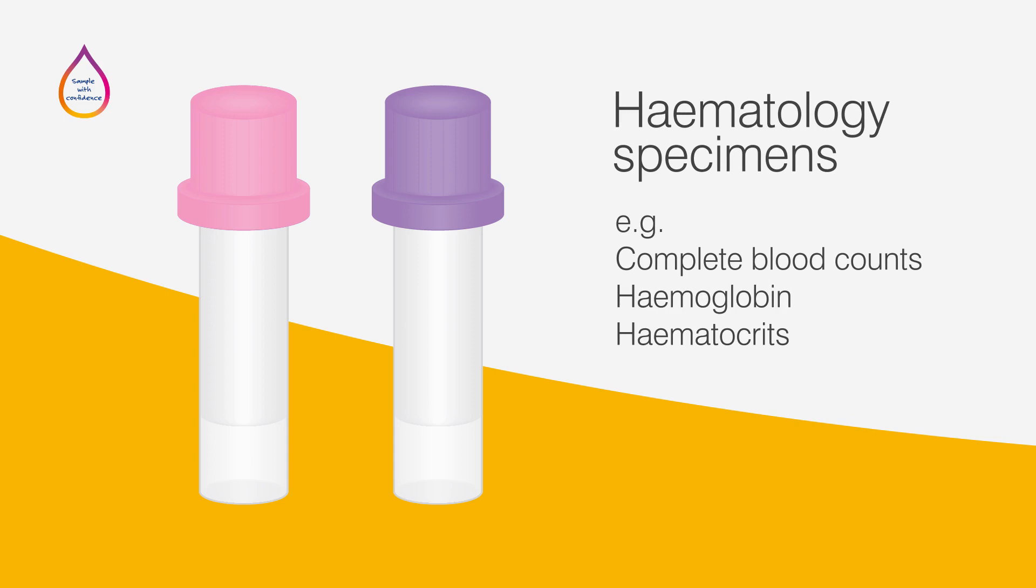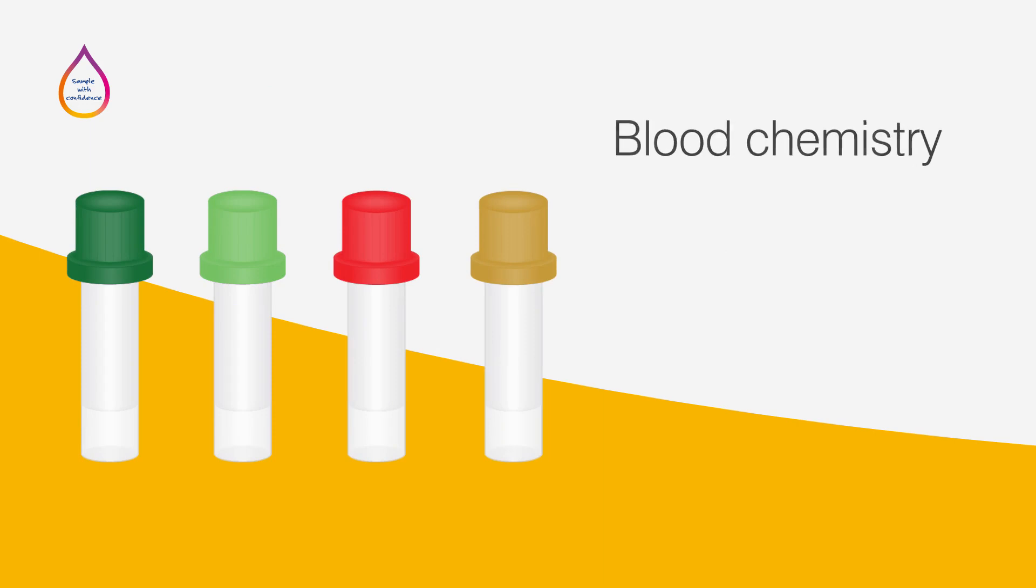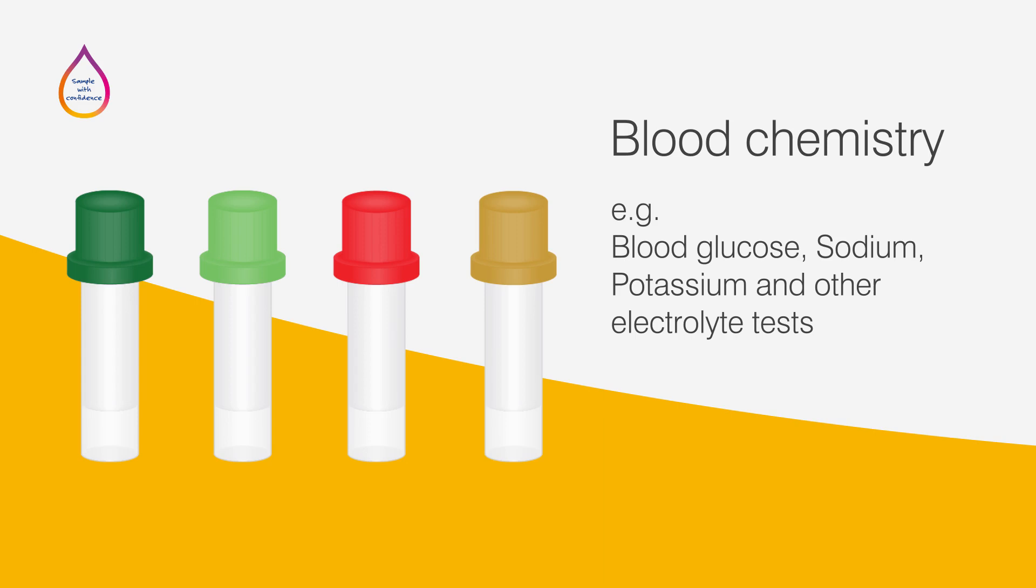This type of tube contains an additive formulated to prevent blood from clotting. The green, red and gold collection tubes are mostly used to test blood chemistry, which includes blood glucose, sodium, potassium and other electrolyte tests.